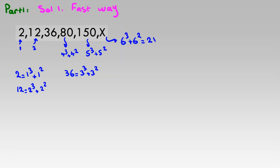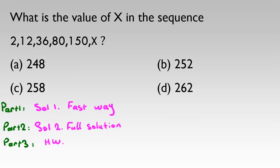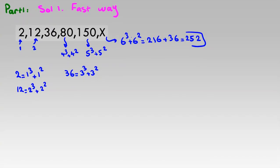6 cubed plus 6 squared is 216 plus 36, which is 252. That is the answer. But you might ask: how do we understand that it is related to a polynomial of degree 3, involving cubes and squares?